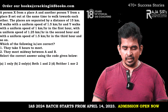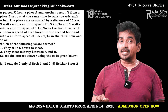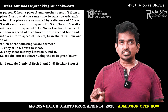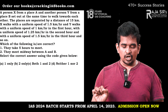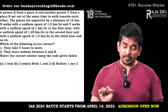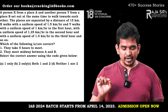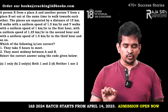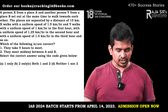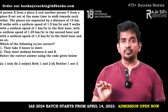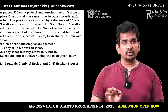Question number two: A person X from place A and another person Y from place B set out at the same time to walk towards each other. The places are separated by 15 km. X walks at 1.5 km/h in the first hour, 1.25 km/h in the second hour, 1.5 km/h in the third hour, and so on. Which is correct? One: they take five hours to meet. Two: they meet midway between A and B.